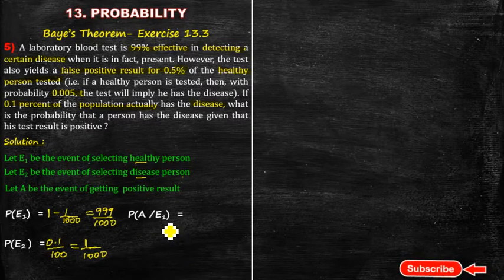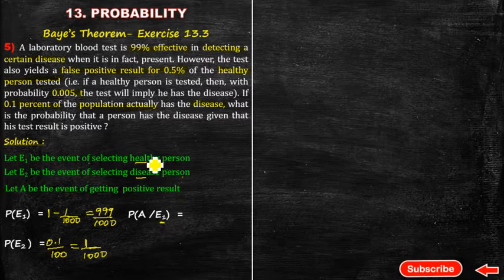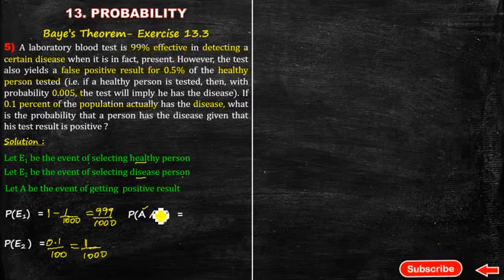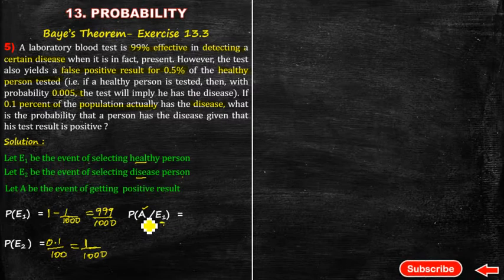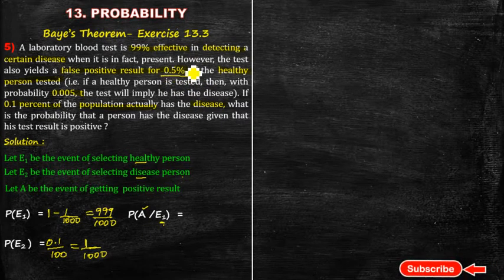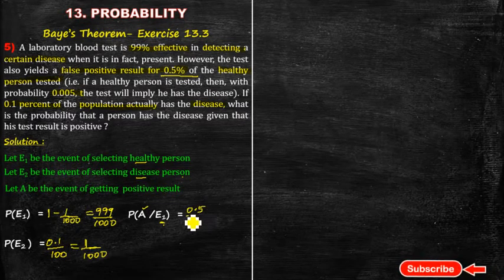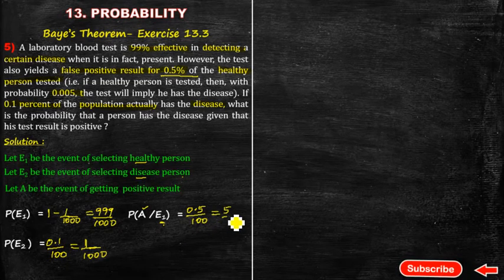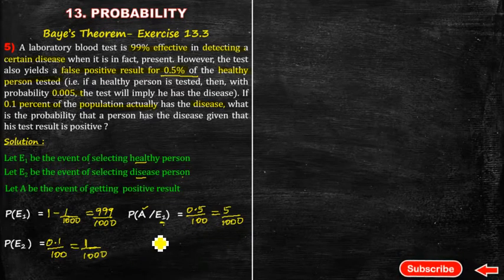Next, the probability of A given E1. E1 is a healthy person. A healthy person showing a positive result has a probability of 0.5%. So, 0.5 divided by 100, which equals 5 divided by 1000.